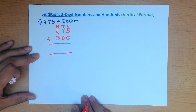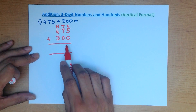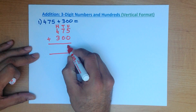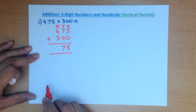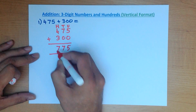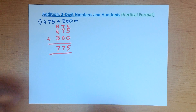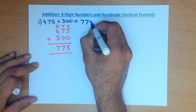As with any addition or subtraction, we always start with the column on the right-hand side. What is 5 plus 0? Nice and easy. 7 plus 0. And the hundreds column, 4 plus 3 is 7. That was nice and easy, wasn't it? 475 plus 300 is 775.